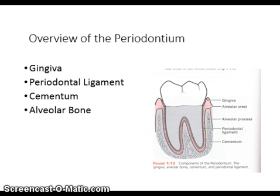The gingiva provides a tissue seal around the cervical portion or neck of the tooth. It covers the alveolar processes of the jaws and holds the tissue against the tooth during mastication. The periodontal ligament suspends and maintains the tooth in its socket. The cementum anchors the ends of the periodontal ligament fibers to the tooth so that the tooth stays in its socket, and also protects the dentin of the root. The alveolar bone surrounds and supports the roots of the tooth.